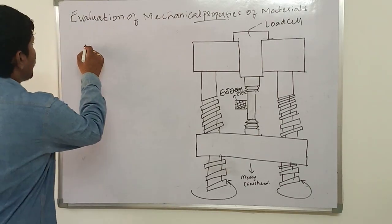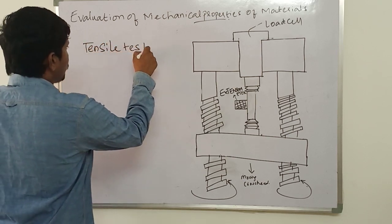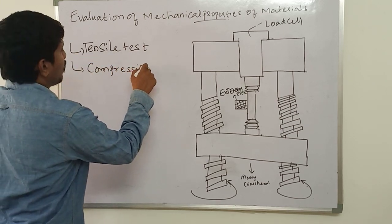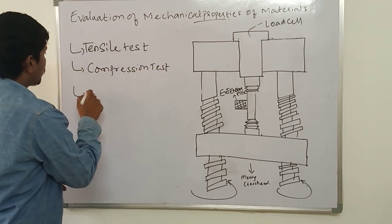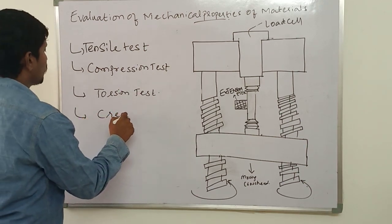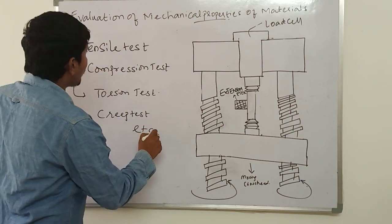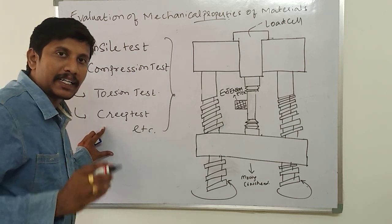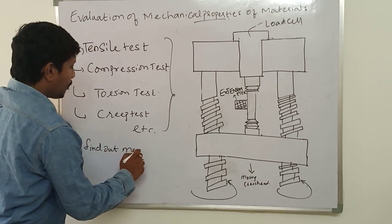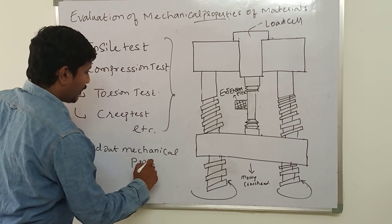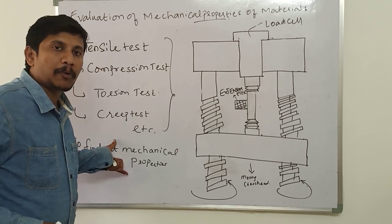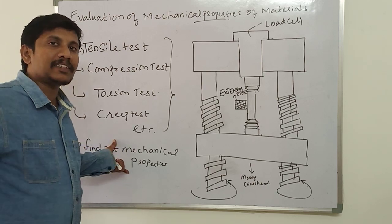Various mechanical tests performed on the materials are: tensile test, compression test, torsion test, creep test, etc. These are some of the tests performed on the engineering material to find out its mechanical properties, so that we can design any material and put it in the service condition.